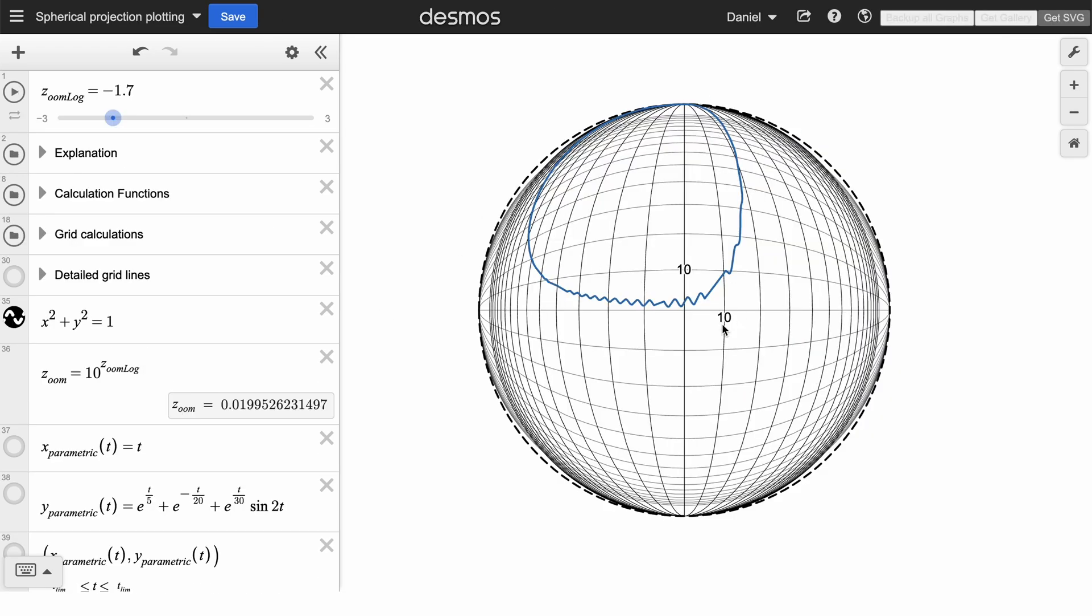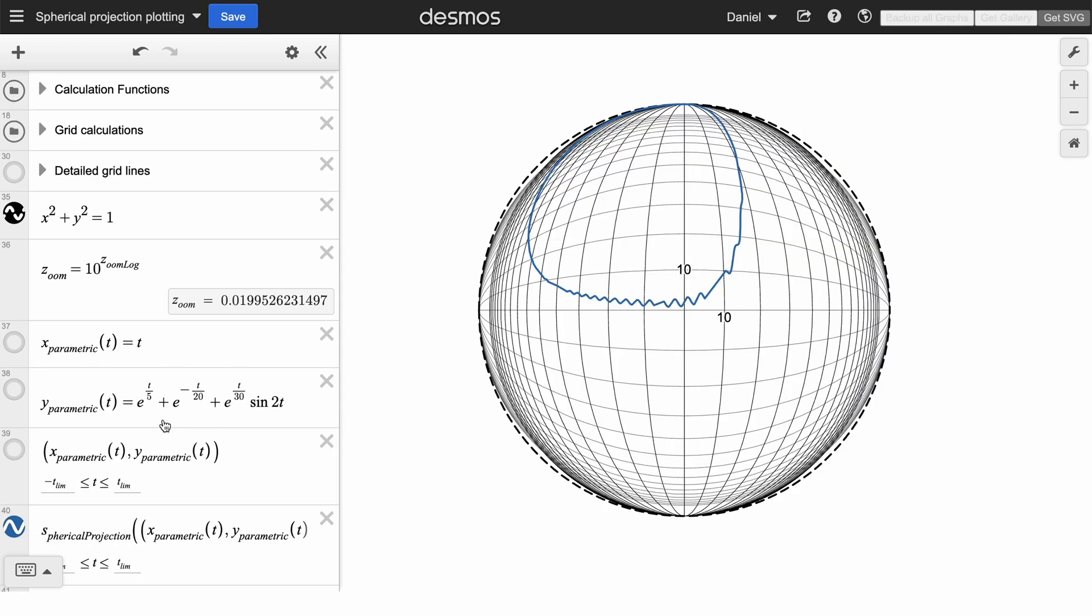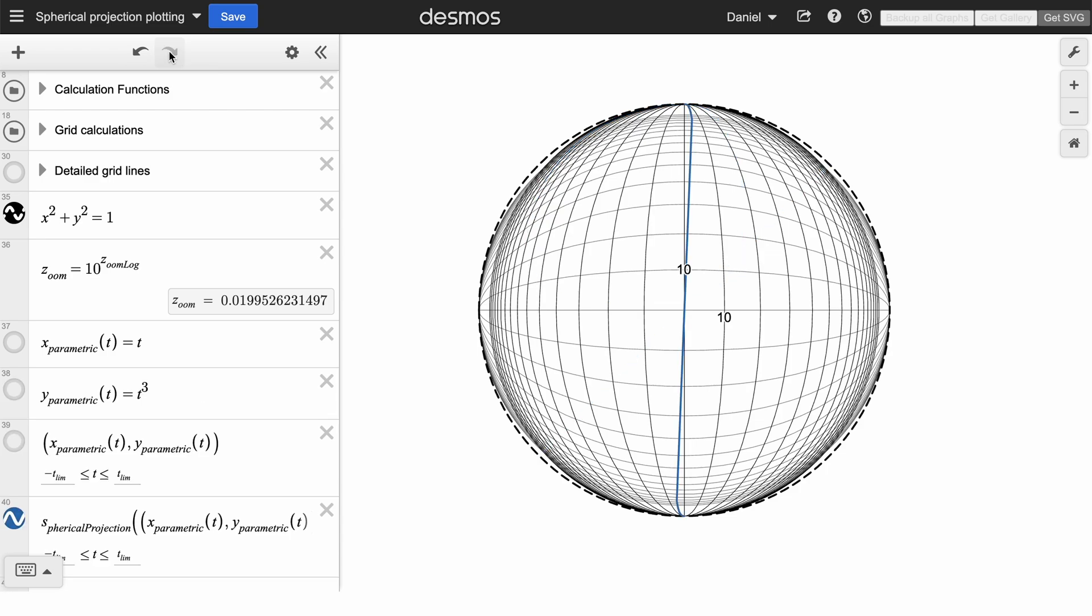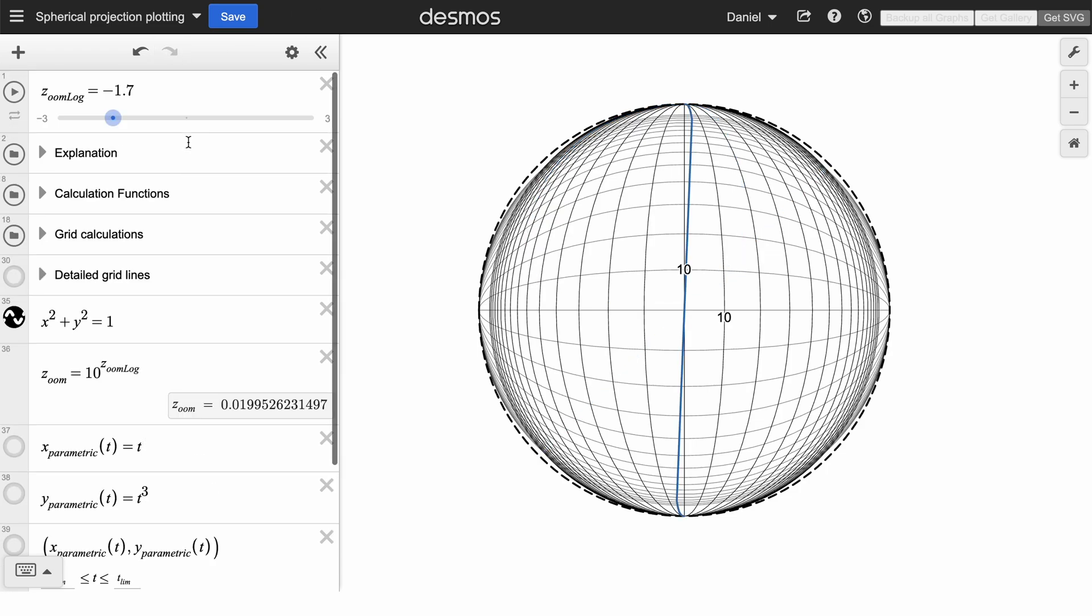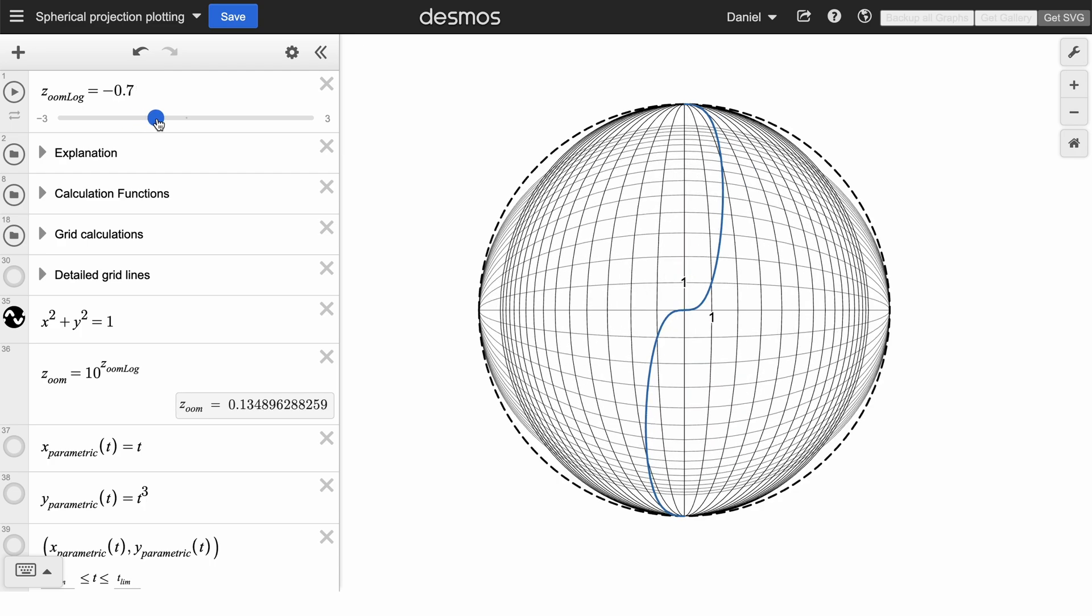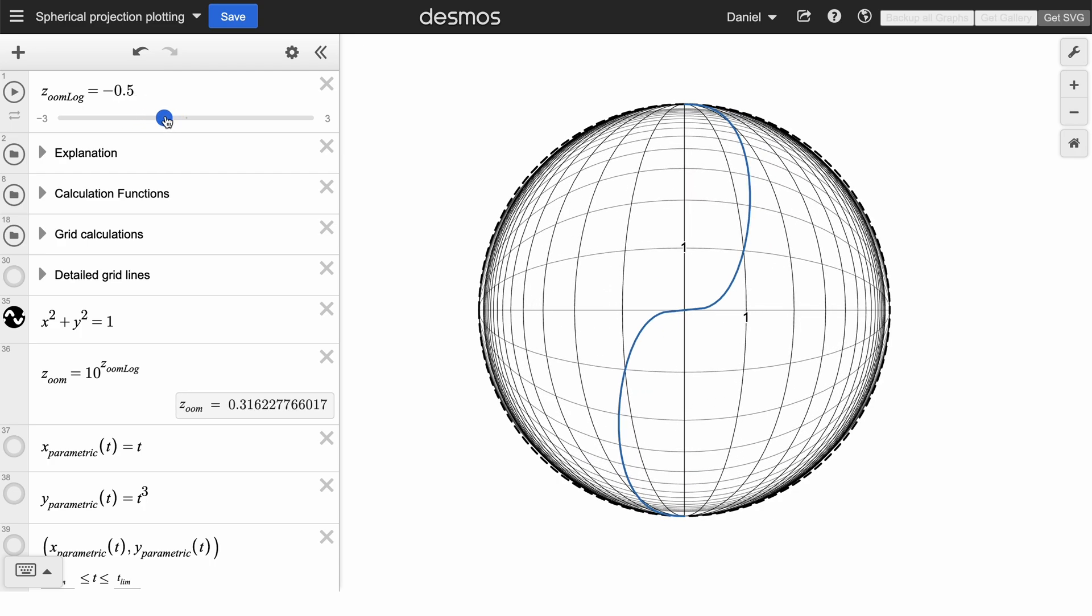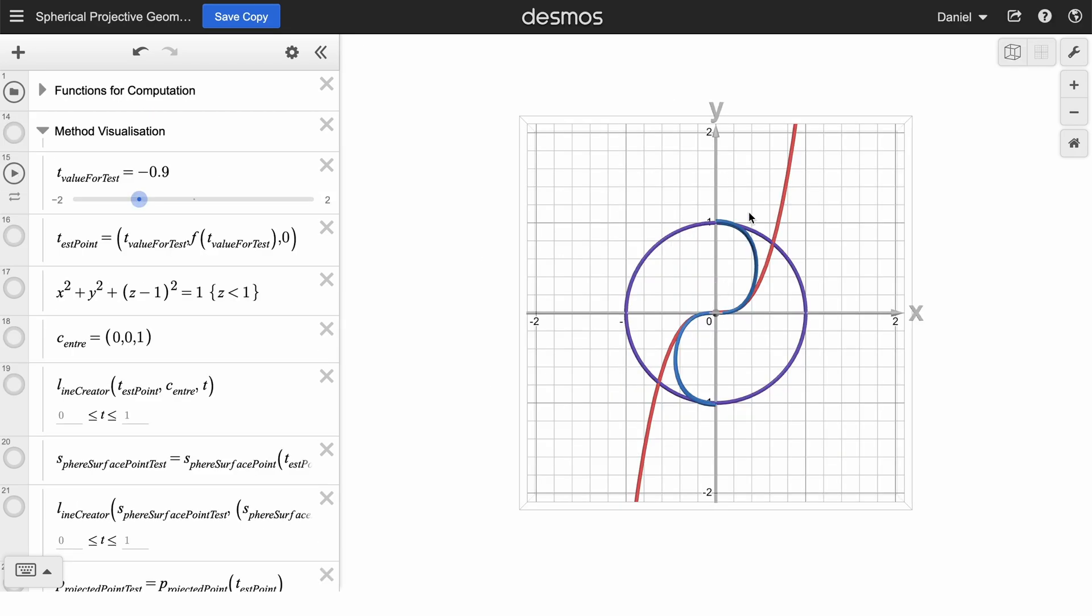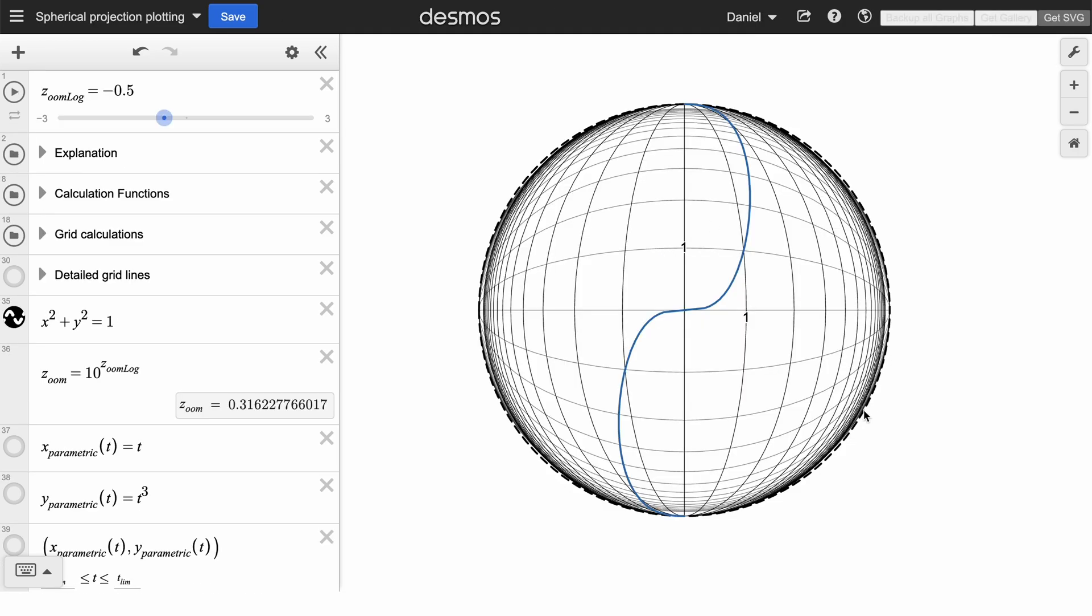This is exactly what this Desmos file is doing. It takes a parametric function and it plots the projected output of that parametric function. If I change the function to be what is essentially y equals x cubed, and then zoom in to fit the scale of the 3D Desmos plot, you get exactly the same result. This is just a fancier version of this made in 2D Desmos.